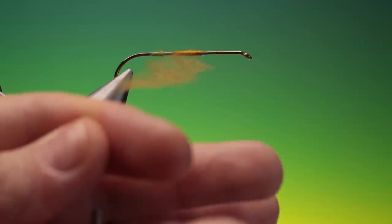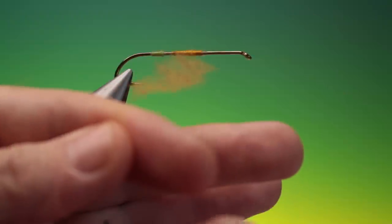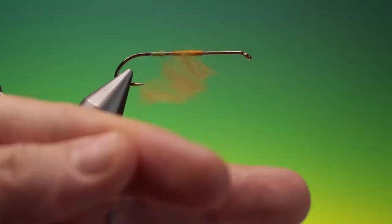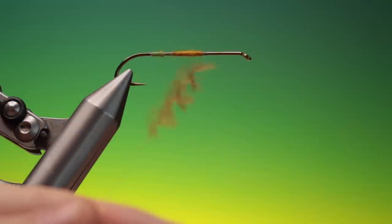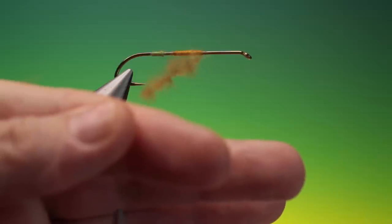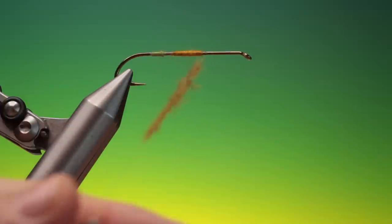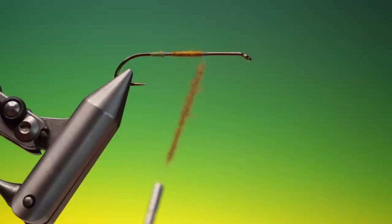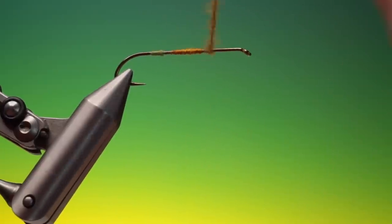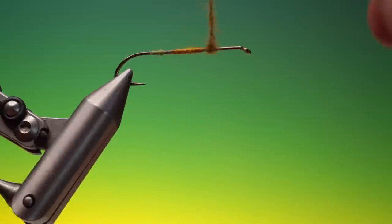So once we've got that dubbing in, this is the scruffy dubbing technique. Then we spin our bobbin clockwise to twist it. And give it another one. And then we get a scruffy dubbing technique.